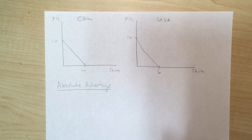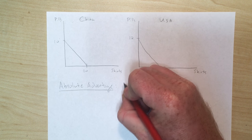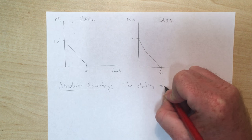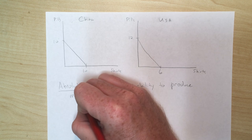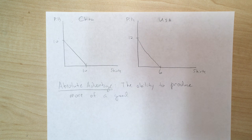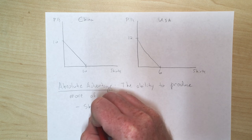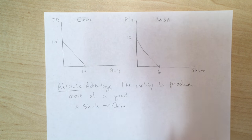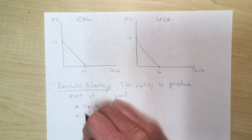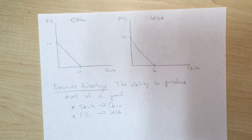The first term to introduce is absolute advantage. Absolute advantage is a simple concept — probably the easiest thing we'll cover all semester. Absolute advantage is simply the ability to produce more of a good or service. To figure out who has the absolute advantage, you just look at who can produce more. China can produce 10 shirts, the US can only produce 6, so the absolute advantage for shirts goes to China. The absolute advantage for pills goes to the US.